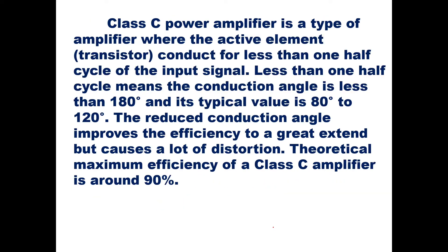In conclusion: a Class C power amplifier is a type of amplifier where the transistor conducts for less than one half cycle of the input signal. The conduction angle is less than 180 degrees, with a typical value of 80 to 120 degrees. The reduced conduction angle improves efficiency greatly but causes significant distortion. The theoretical maximum efficiency of a Class C amplifier is around 90 percent.